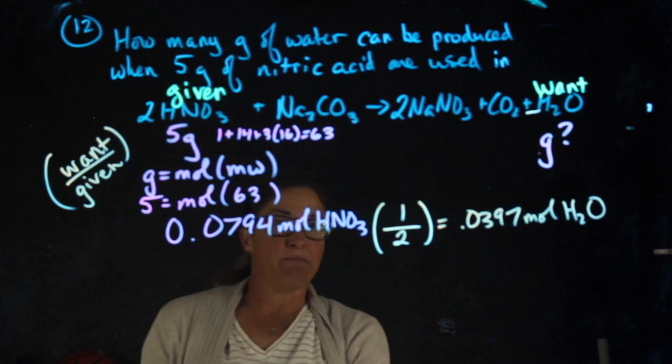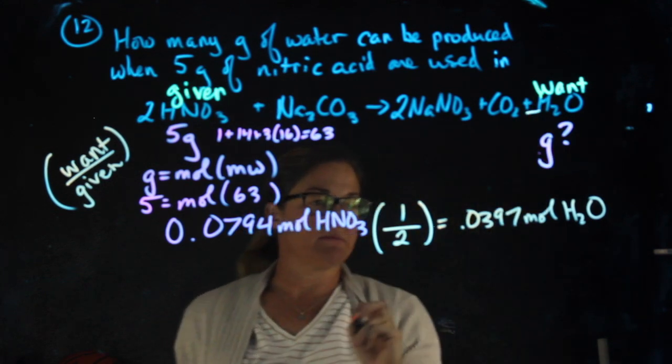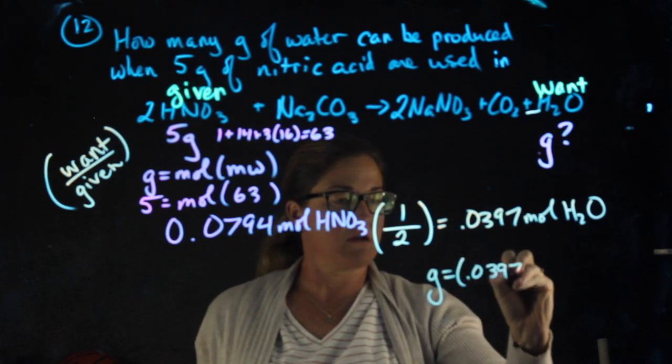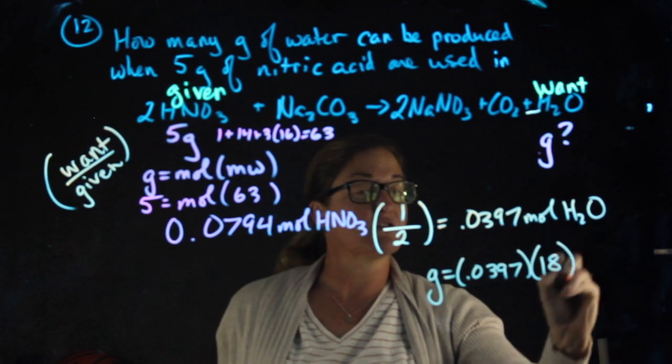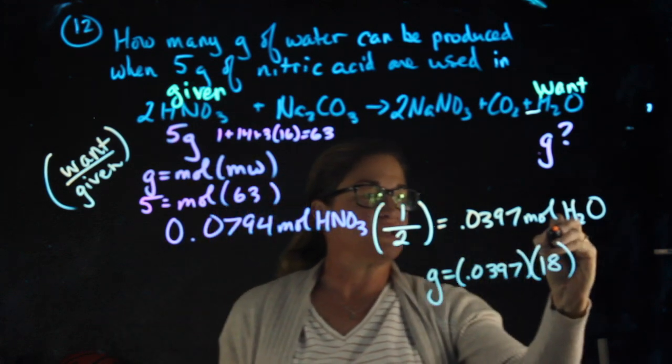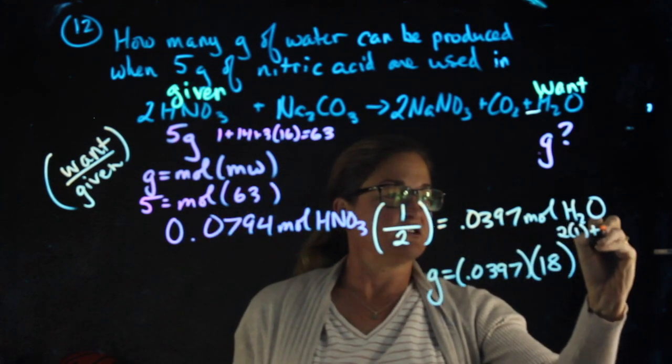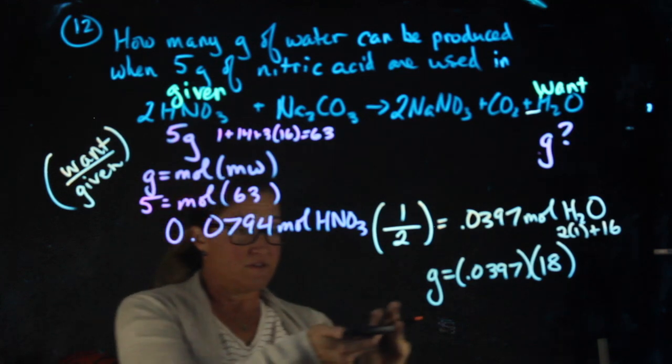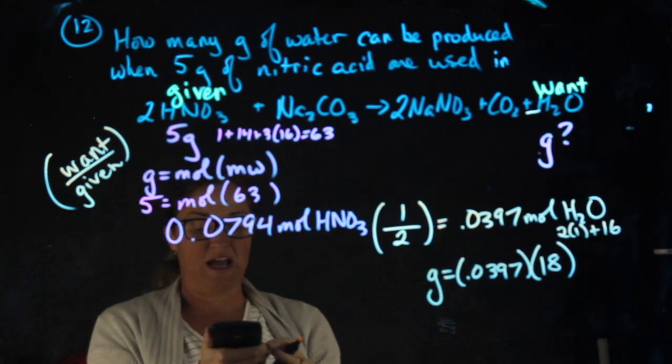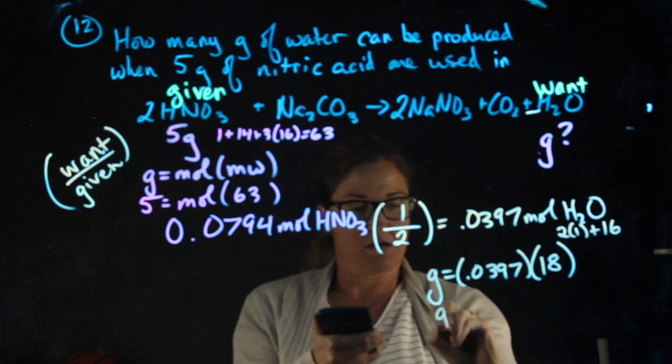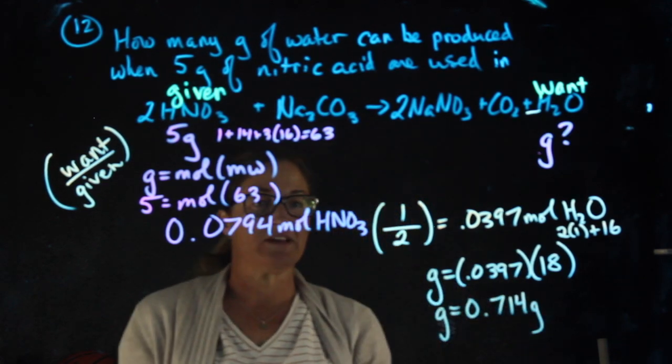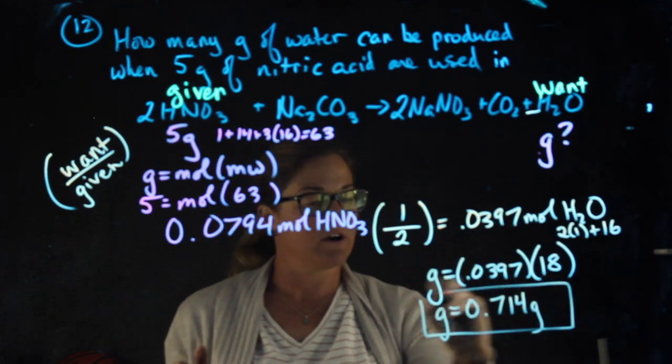For my last step, I need to get back to grams. I want the grams of water, so I'm going to take the moles of water and multiply by the molecular weight of water, which is two hydrogens and one oxygen, a total of 18. So this number I have in my calculator, 0.0397 times 18, gives me 0.714 grams of water.